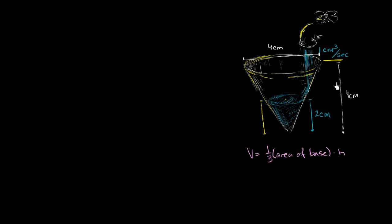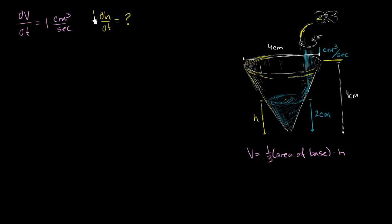Let's think about this. We're given the rate at which the volume of water is changing with respect to time: dV/dt = 1 cubic centimeter per second. We want to find dh/dt — how fast the height is changing with respect to time. One approach is to find a relationship between volume and height at any moment, then take the derivative of that relationship using the chain rule.